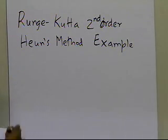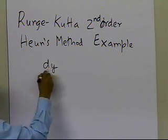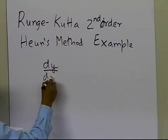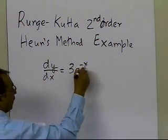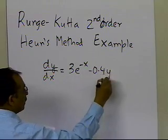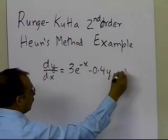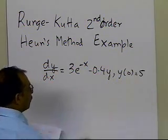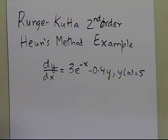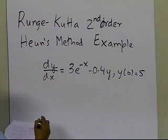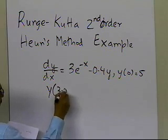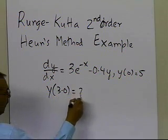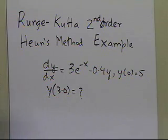We're going to take the differential equation dy/dx equal to 3e to the power minus x, minus 0.4y, where y-sub-0 is given as 5. What we want to do is solve this differential equation and find out what the value of y at x equal to 3 is, using Heun's method.